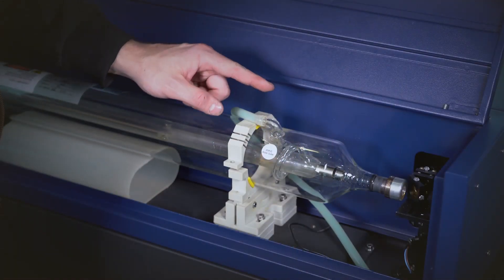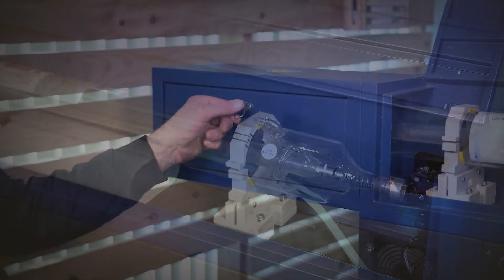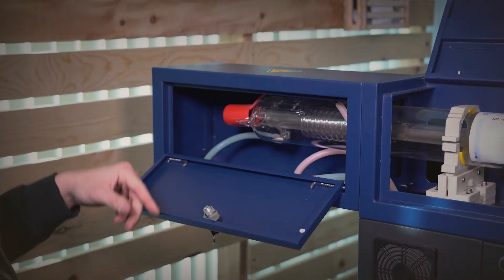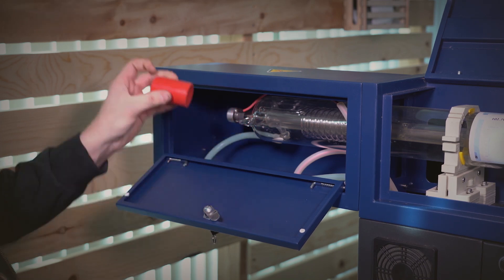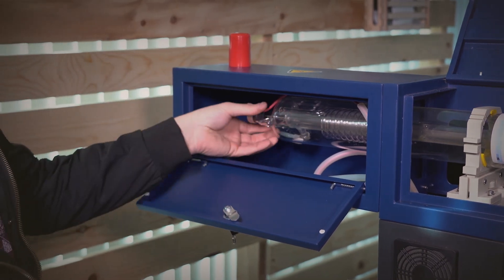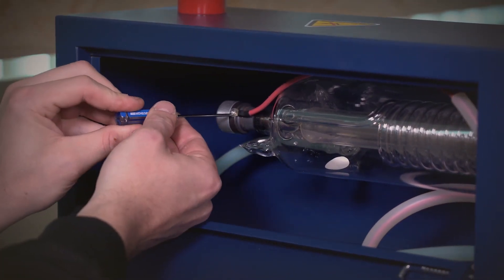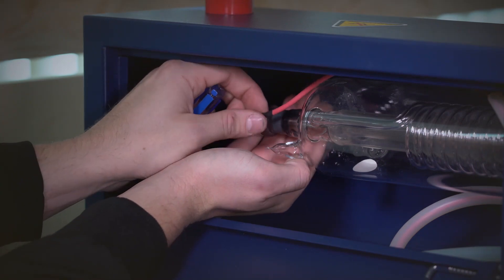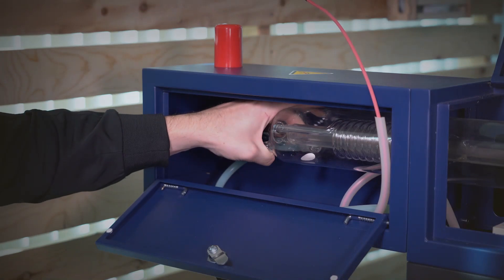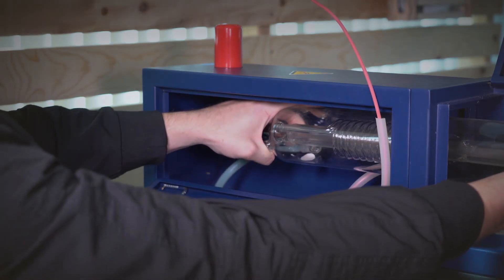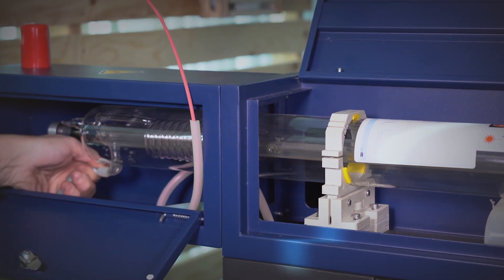Since we're on this side we're going to remove the water line. On this side of the tube we'll carefully remove the insulation cap, place that to the side and then remove the water line.